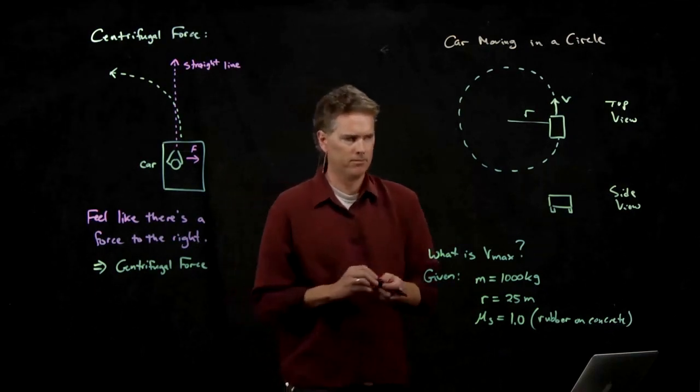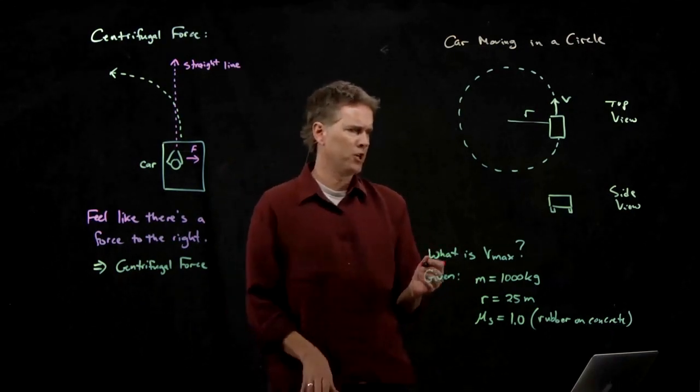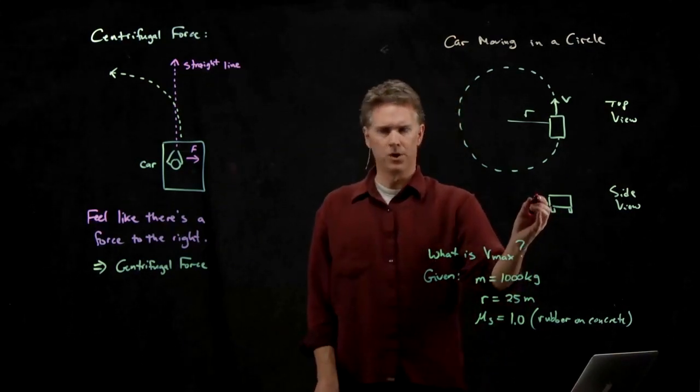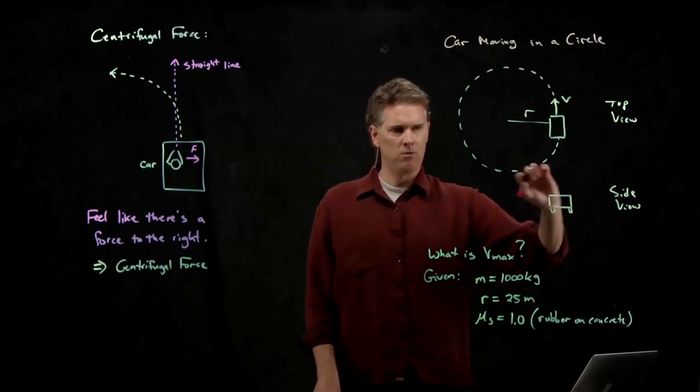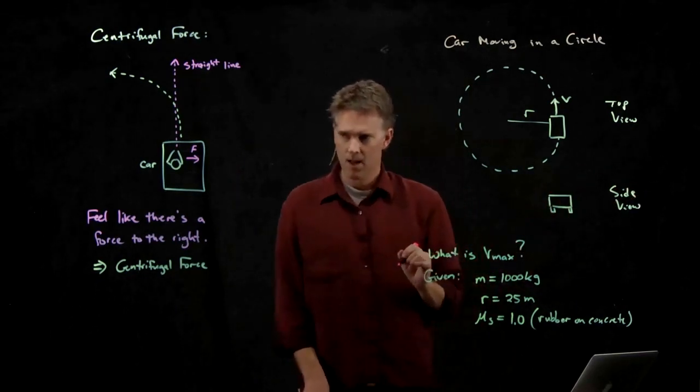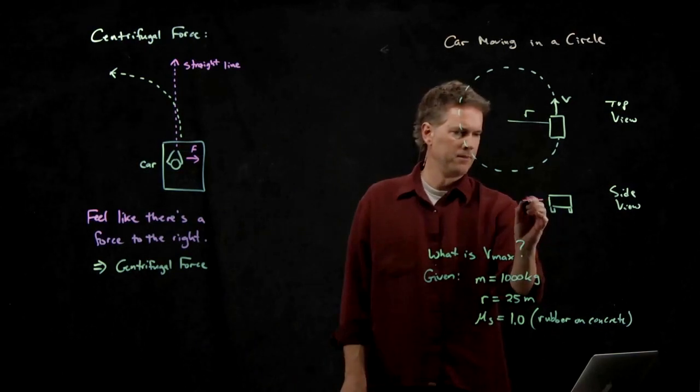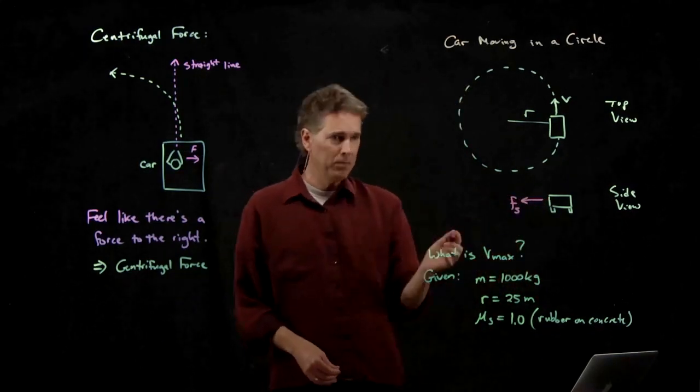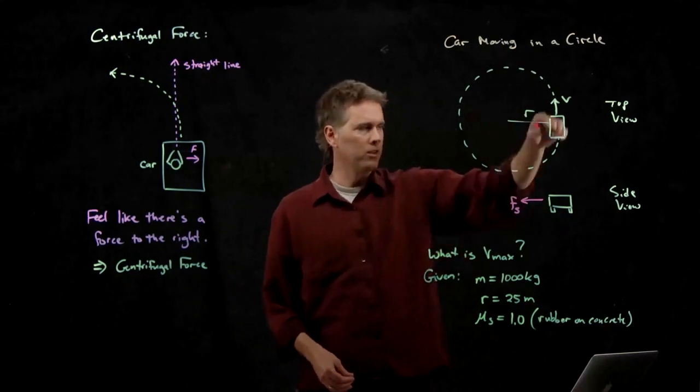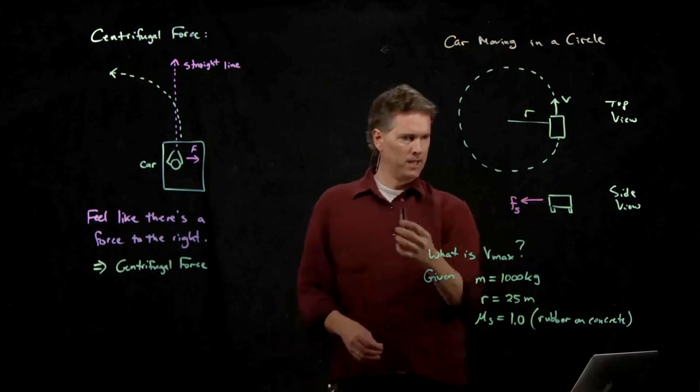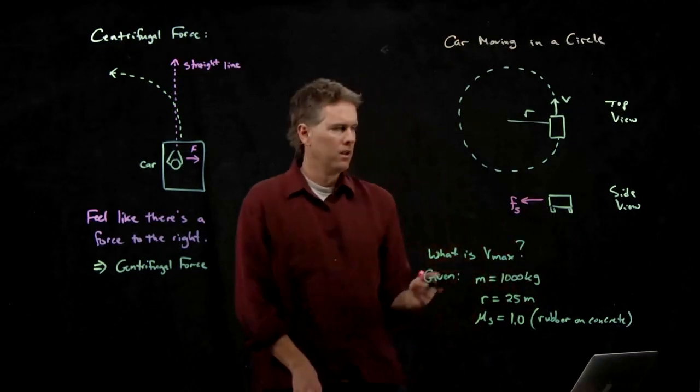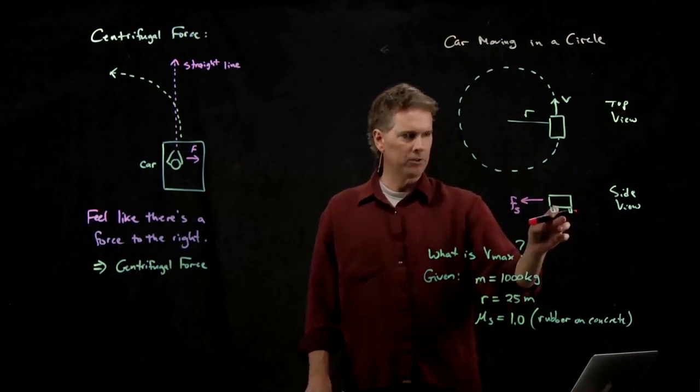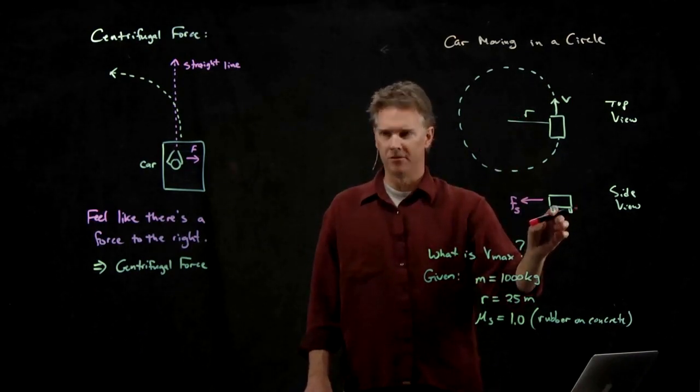We just mentioned one of them. Friction. Which way is friction? In this side view, which way should I draw friction? Up, down, right, or left? Left. That's the force that's keeping us moving in the circle, right? Top view looks like this. Side view would be like this. Friction is towards the circle center.